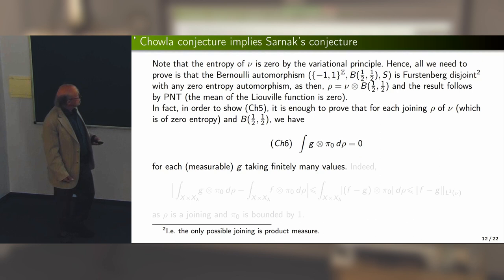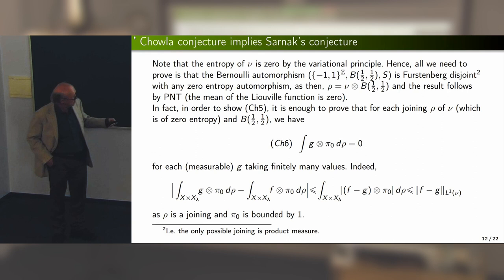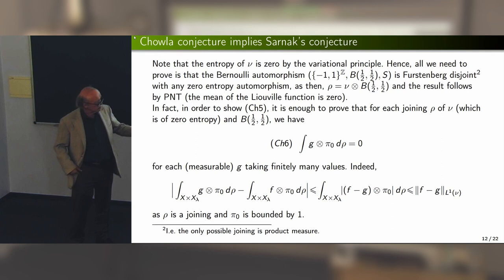Next, I can replace the function f by a continuous function g taking finitely many values, since such functions are dense in L1. The difference of the integrals can be bounded by considering only the first marginal rho, and finite-valued functions are dense in L1, so the approximation works.